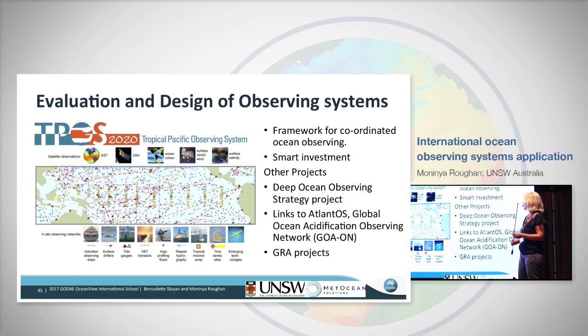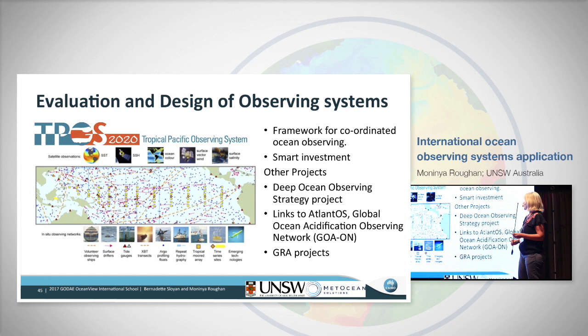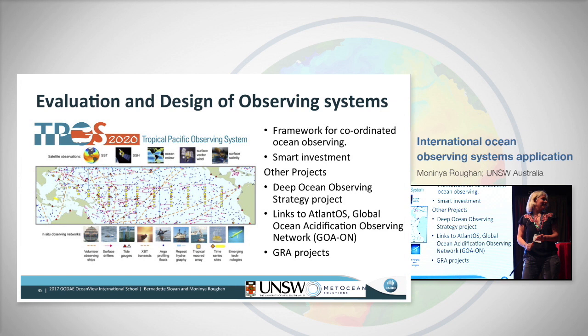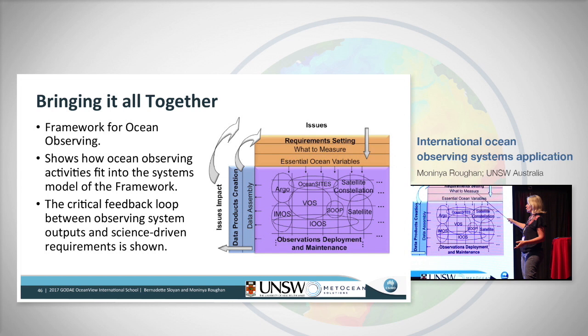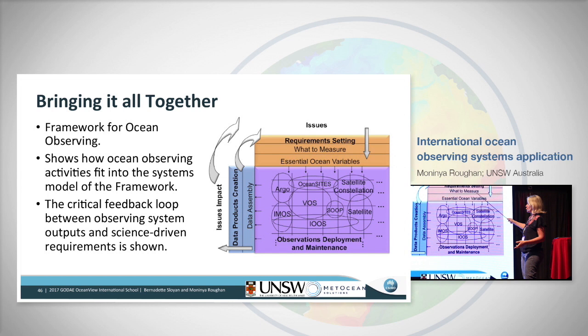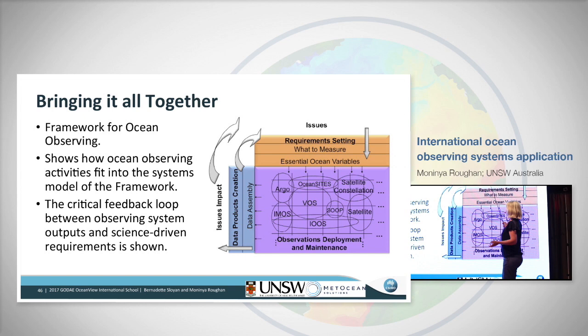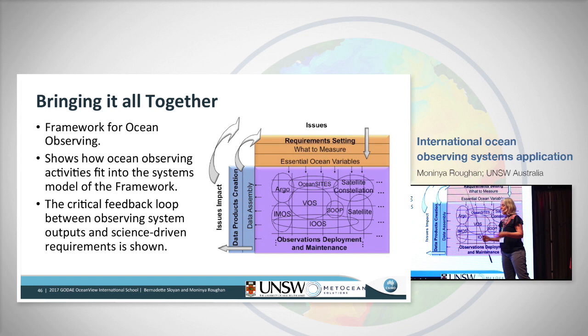Observation impact studies are so important for understanding which patches of the ocean we do need to observe. It's a framework for coordinated ocean observing. Bringing it all together: we have the GOOSE framework, we think about issues and requirements — what to measure, what the essential ocean variables are. Then you've got all the different platforms contributing to observations, and then data products that impact the issues. It's a critical feedback loop — continually assessing whether the observations are necessary, investing in the right place, time, and asset, science-driven based on requirements.